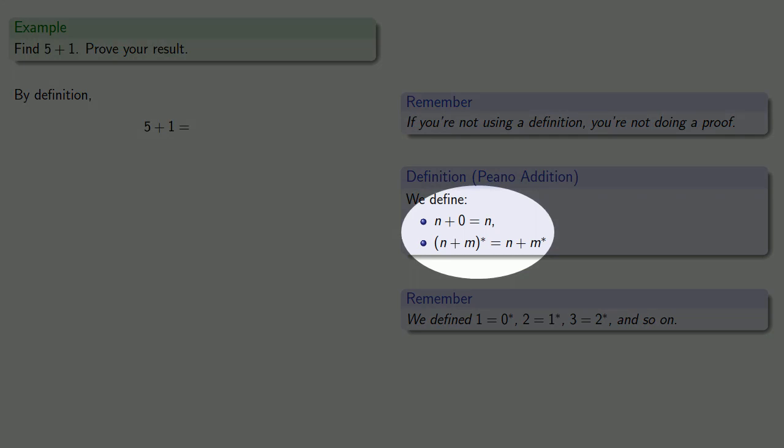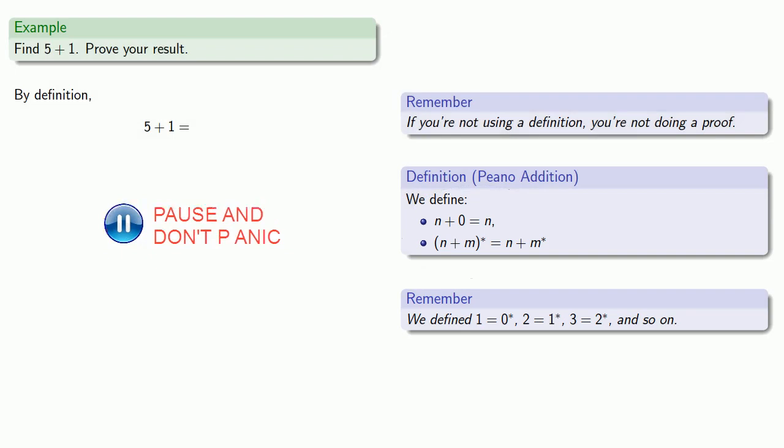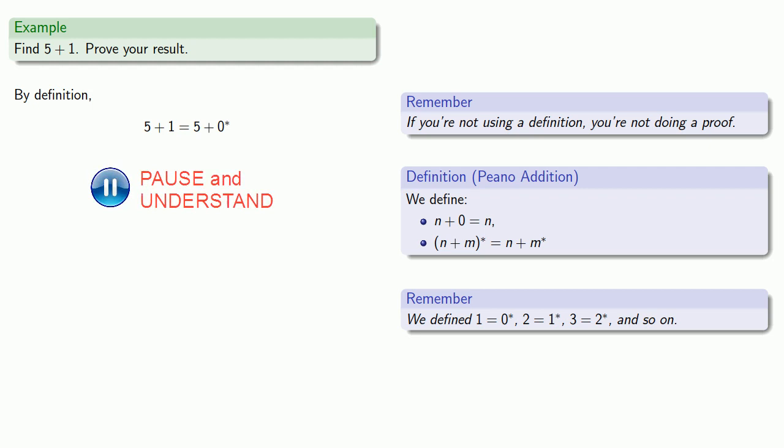There's nothing in here that says what happens when you add 1. But we do know that 1 is the successor of 0. And so 5 plus 1 is the same as 5 plus the successor of 0. And we also know that n plus the successor of m is the same as the successor of n plus m. And so that tells us that 5 plus the successor of 0 is the same as the successor of 5 plus 0.